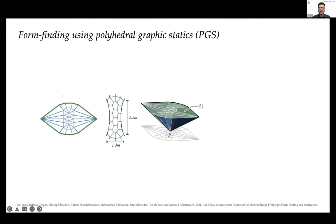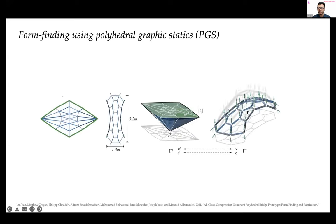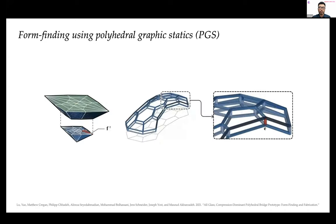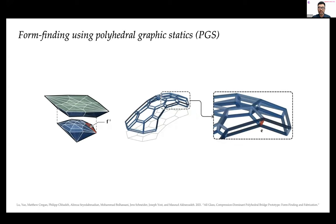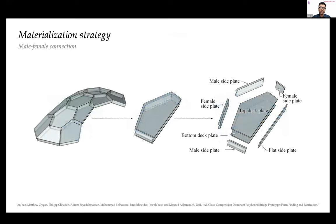The design is achieved by polyhedral graphic statics. We first deal with the single layer funicular form. In this stage, we consider topology, geometry, and the rise of the bridge. Then we quickly move to the double layer bridge by simply subdividing the force diagram into two layers. After getting this base geometry, each polyhedral cell is materialized into one hollow glass unit.